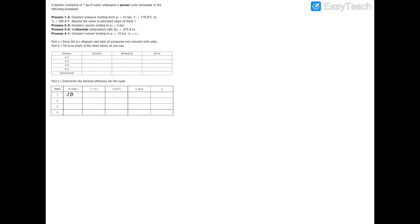At state 1 we have P1 equals 10 bar and T1 equals 179.9°C. T2 goes to 562.6°C. Process 1 to 2 was constant pressure heating, so P1 equals P2, meaning P2 equals 10 bar. Because it's constant pressure heating — note the word heating, not cooling — heat enters the system. Positive heat transfer means it's entering the system, so process 1 to 2 will have a positive sign. We're also told the water is a saturated vapor at state 1, so x1 equals 1.